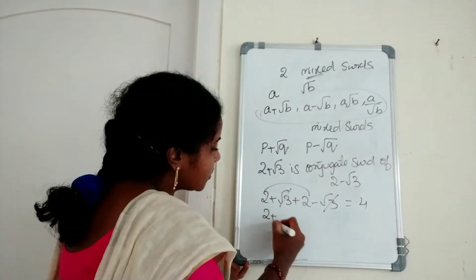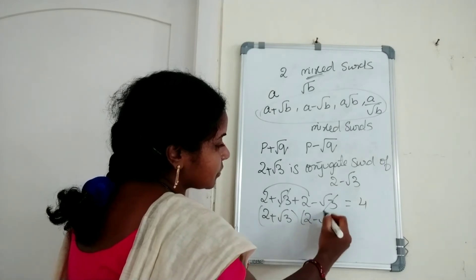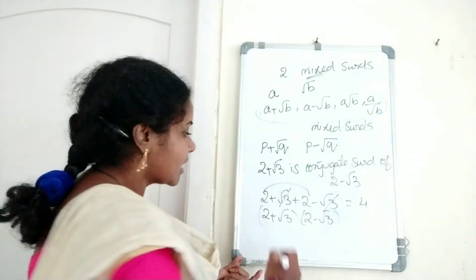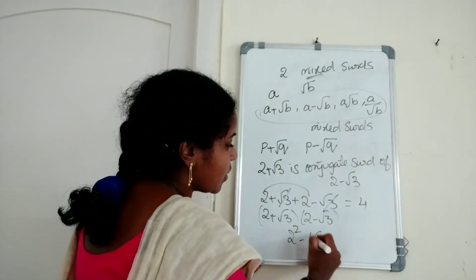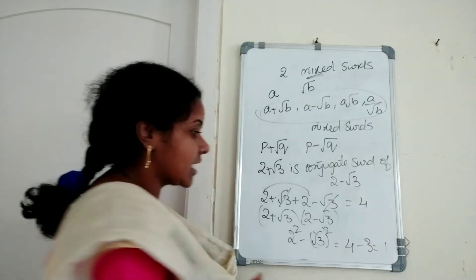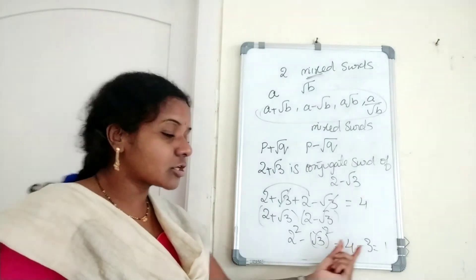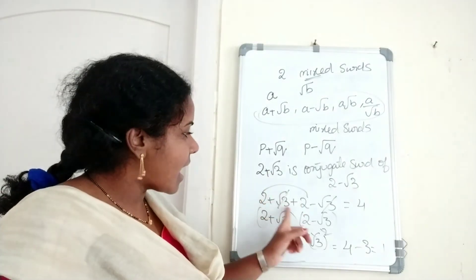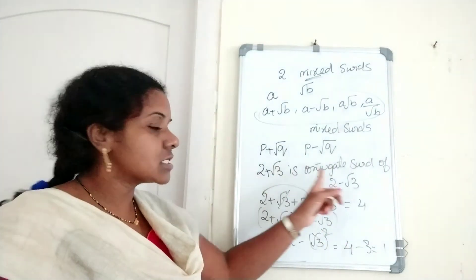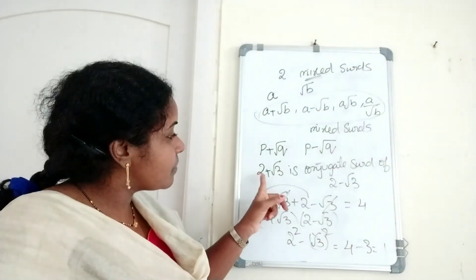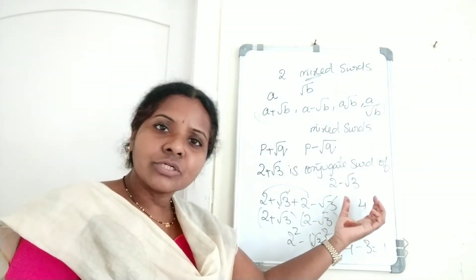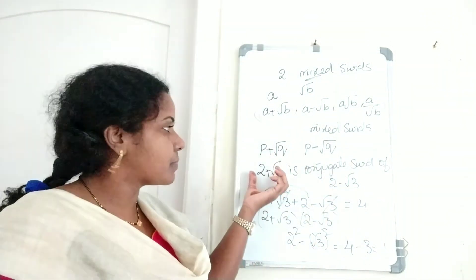Now the product: 2 plus root 3 into 2 minus root 3. Using A plus B into A minus B equals A squared minus B squared, that means 2 squared minus root 3 whole squared. 2 squared is 4, minus 3 equals 1. Here the product is also a rational number. So the sum and product of these two mixed surds is a rational number, and those two surds are conjugate to each other.